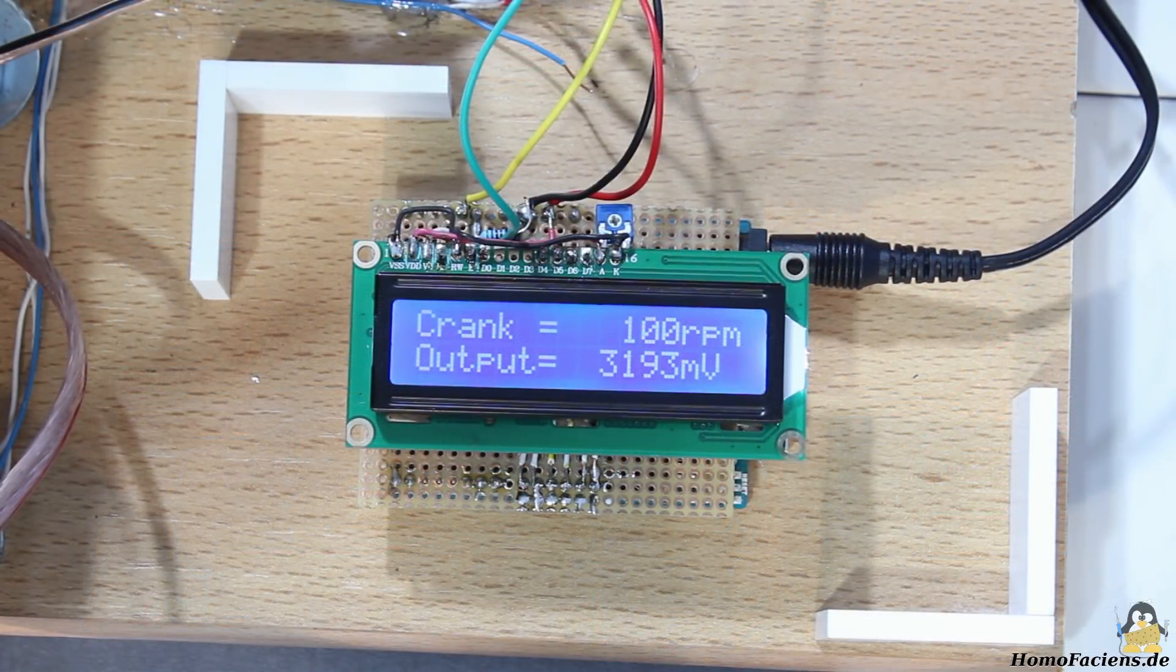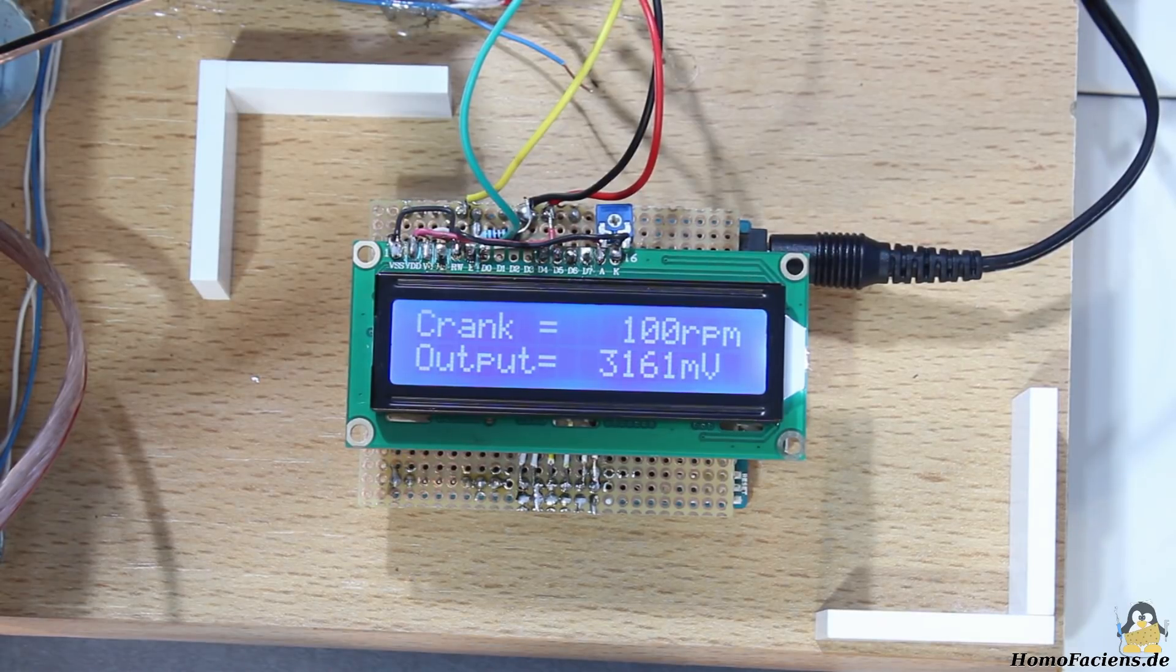With 120 revolutions per minute on the crank, we get 6000 revolutions per minute on the generator. I can go down to just 100 revolutions per minute on the crank and the Arduino still works fine.